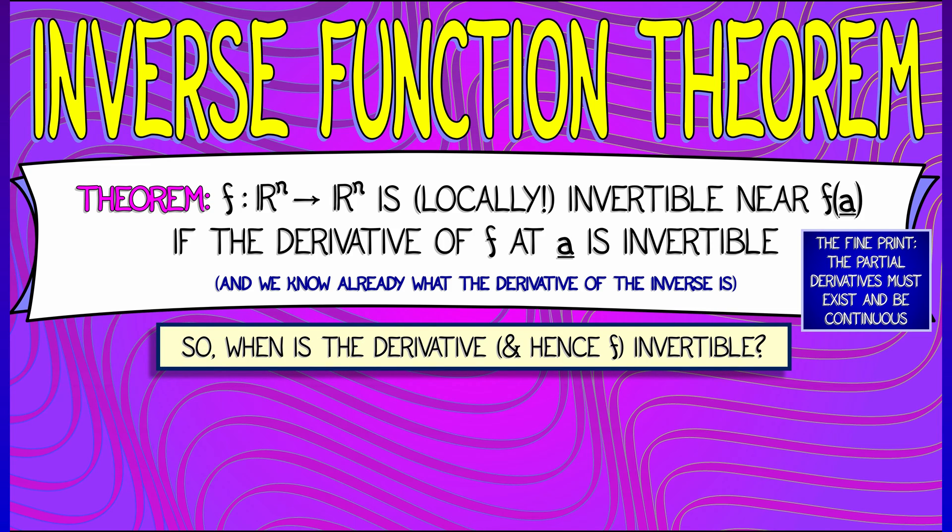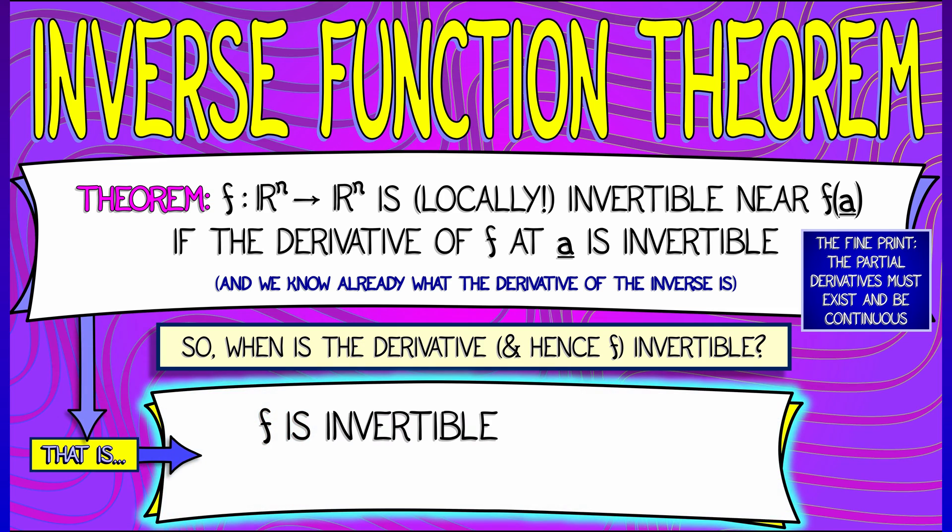When is the derivative, and hence f, locally invertible? It is invertible near f of a if the determinant of the derivative of f at a is non-zero.